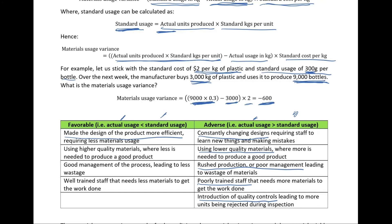On the flip side, reasons for a favorable materials usage variance — where we use less ingredients than expected — could include a more efficient product design requiring less material. Some plastic bottle manufacturers even label their bottles showing they use 30% or 20% less plastic, both demonstrating environmental responsibility and reducing costs. Using higher quality materials might mean you need less of them to produce more products. Good management leading to less wastage, or well-trained staff who don't waste materials, can also contribute.